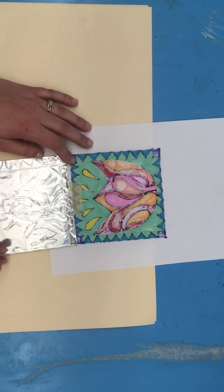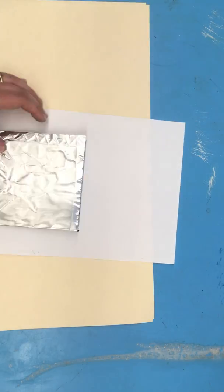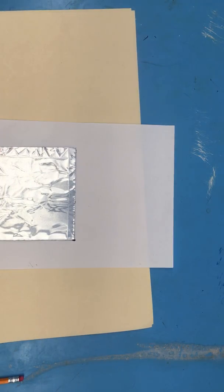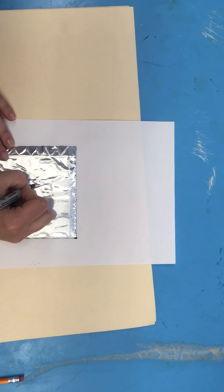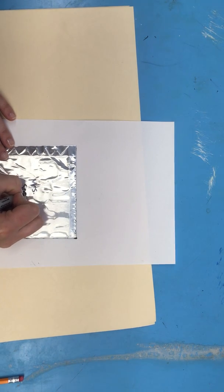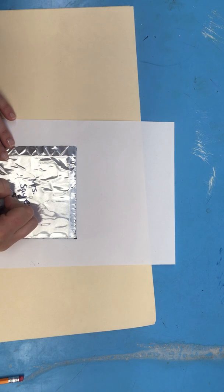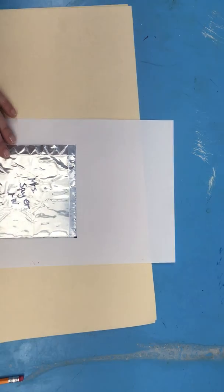When you're all done, you want to go to the back of your metal tooling foil. And you want to use a black sharpie to write your name and your class.